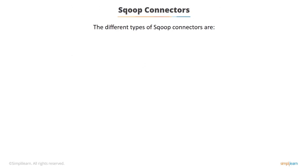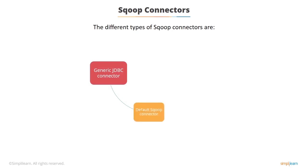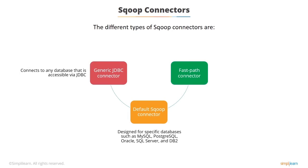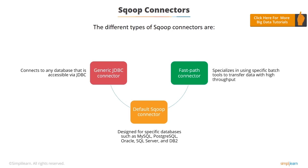Now we will look at the various connectors used to connect Sqoop to different databases. The different types of Sqoop connectors are Generic JDBC, Default Sqoop, and Fast Path connectors. The Generic JDBC connector can be used to connect to any database accessible via JDBC. The Default Sqoop connector is designed for specific databases such as MySQL, PostgreSQL, Oracle, SQL Server, and DB2. The Fast Path connector specializes in using specific batch tools to transfer data with high throughput, for example, MySQL and PostgreSQL databases.